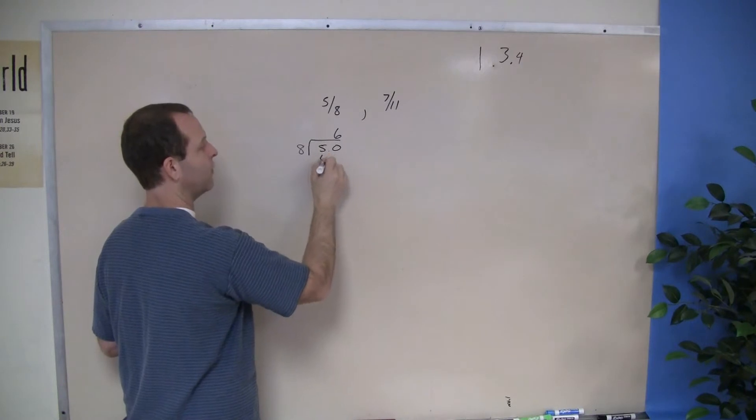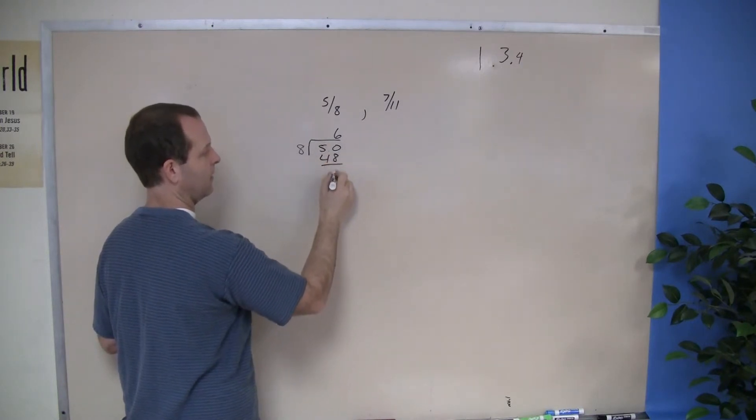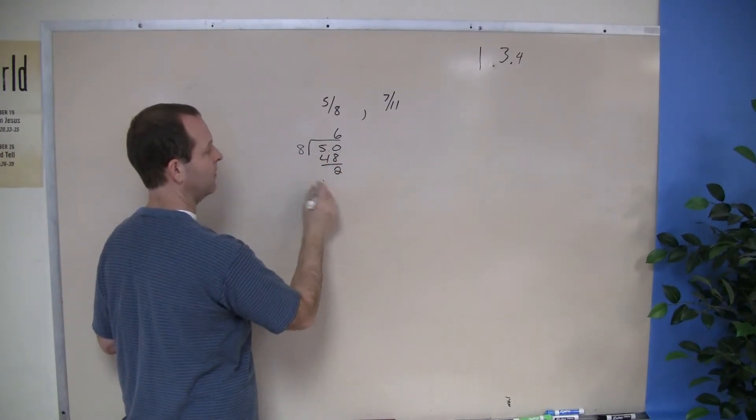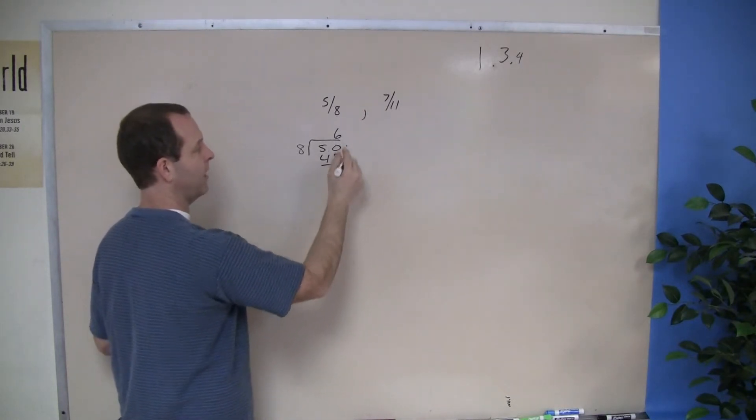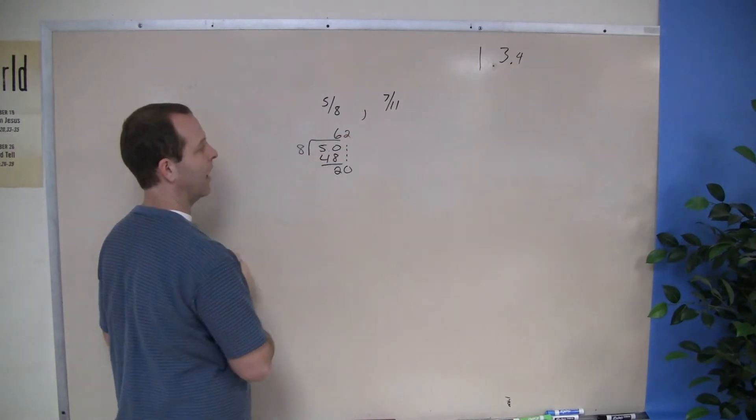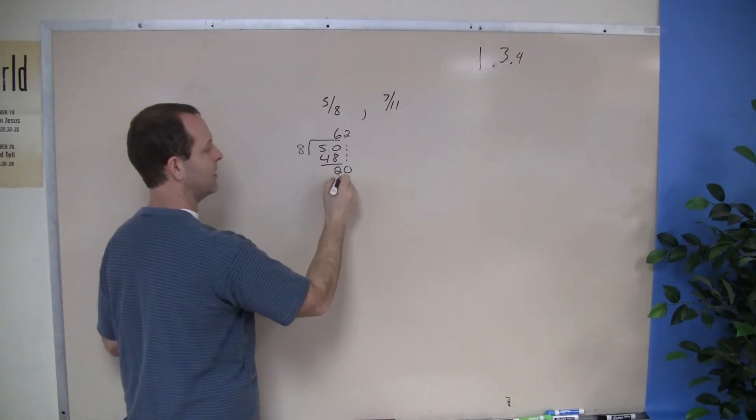6 times 8 is 48. Subtract, I'm left with a 2. 8 does not go into 2, so I'm going to drop down a 0. 8 goes into 20, 2 times. 8 times 2 is 16.